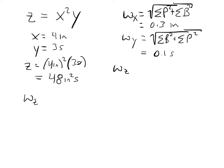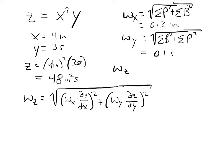So, the uncertainty in z is going to be the square root of the uncertainty in x times the partial of z with respect to x squared plus the uncertainty in y times the partial of z with respect to y. And we have to do each one of those partial derivatives and squared terms for each variable in our z equation.